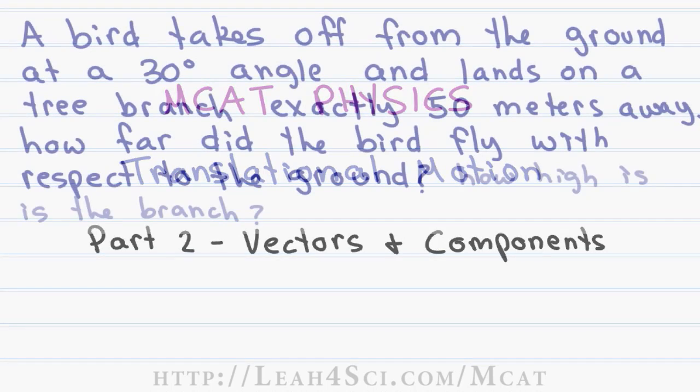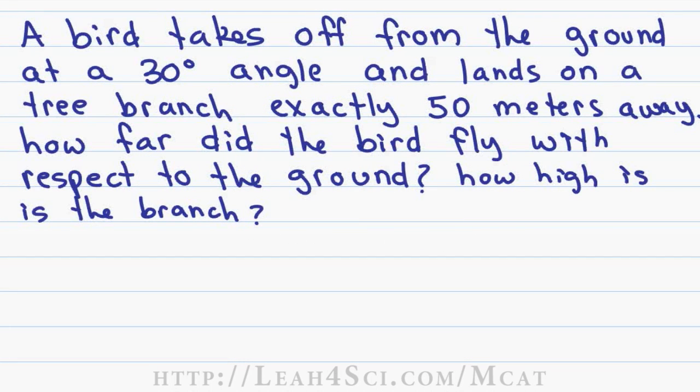For example, you may be faced with a question like this. A bird takes off from the ground at a 30 degree angle and lands on a tree branch exactly 50 meters away. How far did the bird fly with respect to the ground? How high is the branch? The bird flew exactly 50 meters but because the bird flew at an angle, the distance on the ground, meaning if you were to follow under the bird as it flew, would not be 50 meters. Let's represent this with a diagram.